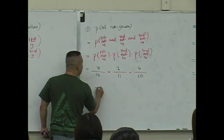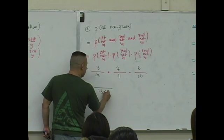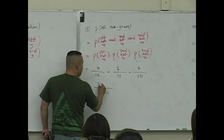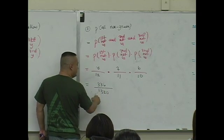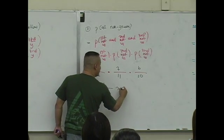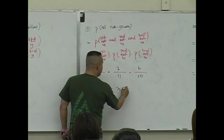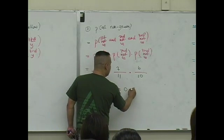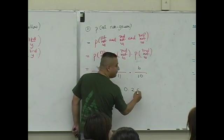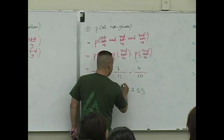What do you get? Three hundred thirty-six over 1,320, approximated to the nearest thousandths? Point two five five.